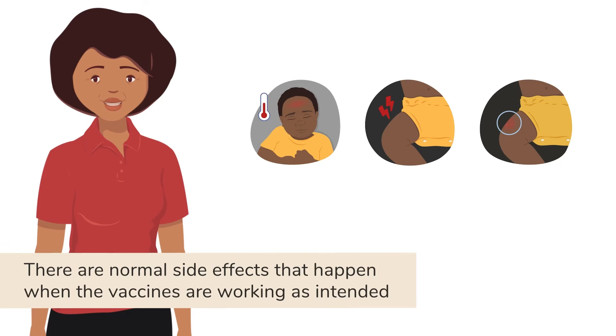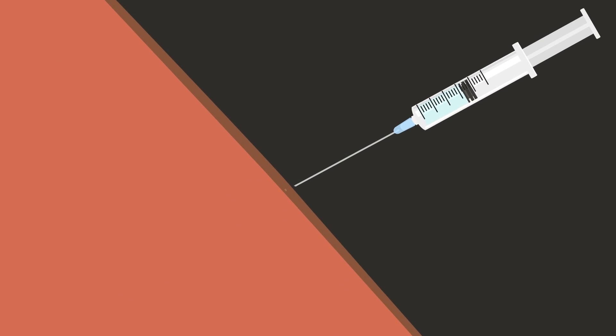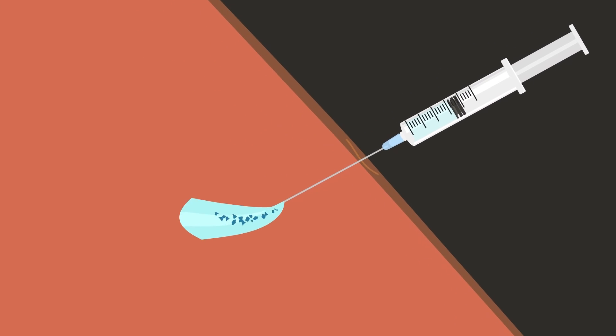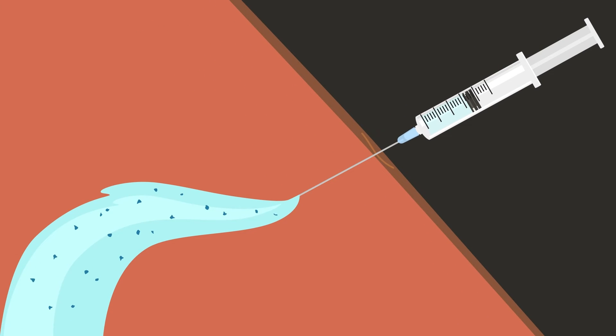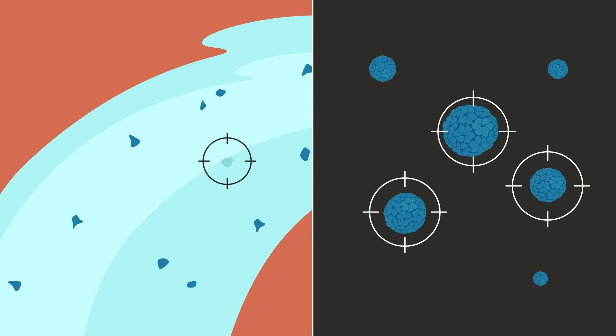However, the short-term discomfort from an injection or side effects is much less worrisome compared to the dangers of getting the actual disease. Vaccines work by showing the body a small, harmless piece of a germ that can cause severe disease and teaches it how to fight against it. So when the body is exposed to the actual germ in the future, it knows just what to do.